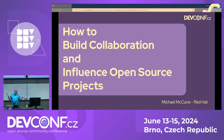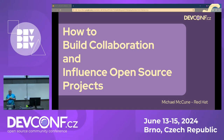Thanks everybody. My name is Michael McCune. I'm a software developer at Red Hat. I'm going to talk to you today about how to build collaboration and influence in open source projects. I'll start by looking at what collaborations are, what influence is, and then share some of my suggestions about what you can do to build those things.